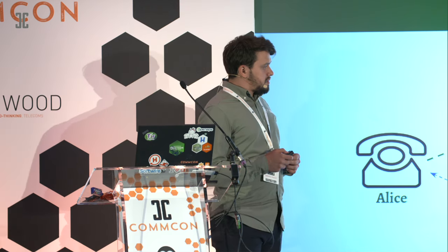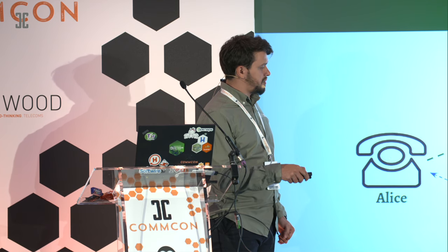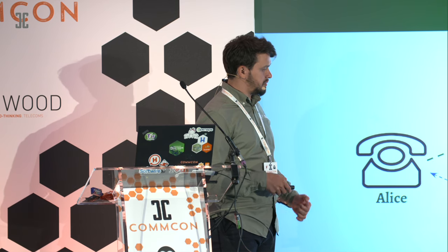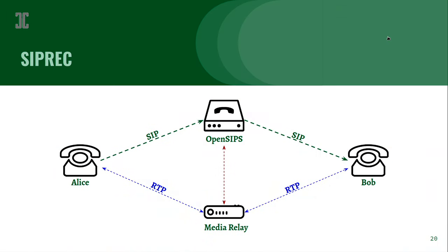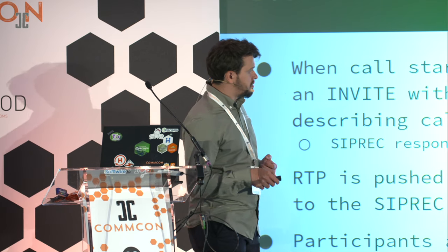Getting back to the previous scheme: we had Alice talking to Bob and RTP flowing through the media relay, but now we have a third entity — the SIPREC recorder. It needs two things: who's talking in the call, and what are they talking about — i.e., the RTP payload. Whenever the call starts, OpenSIPS sends a call to the recorder and instructs the media relay to send RTP to it.